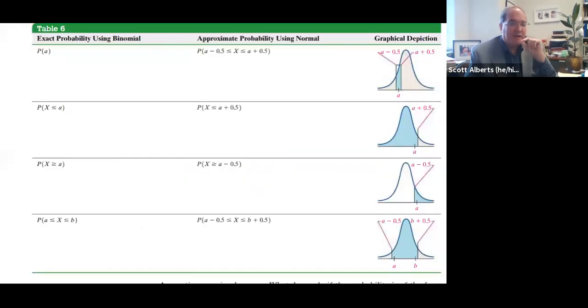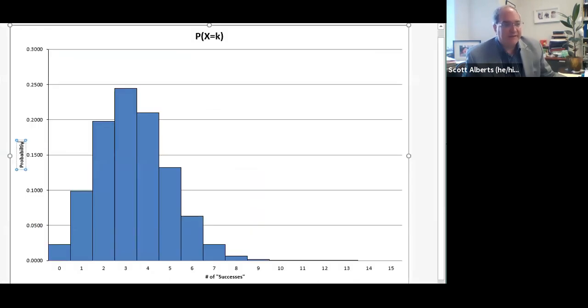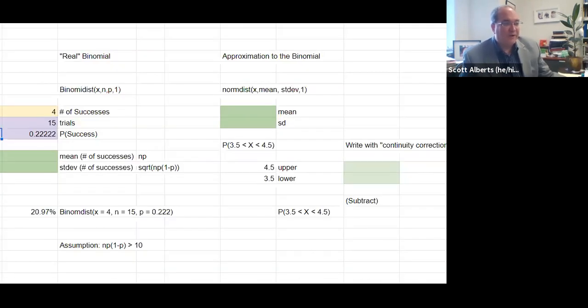The complication is this idea of the continuity correction where we're going to add or subtract 0.5 as we do it. Here is a Google spreadsheet that I set up for this. In craps, the dice game, a craps is when you roll a 7 or an 11. We're going to say, what if we do it 15 times, which was the example that we had here on this chart. The probability of getting four of them was about 21%.